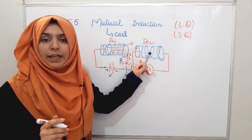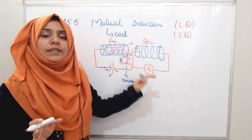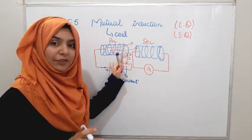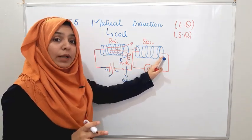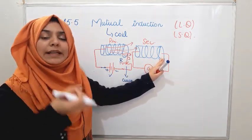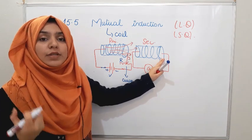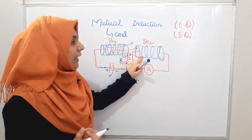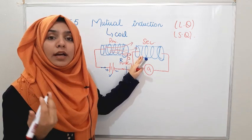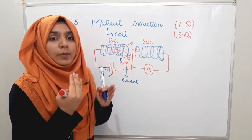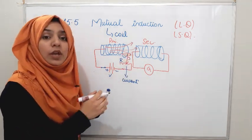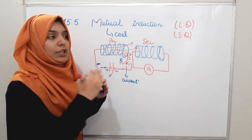When the current reaches the coil, we generate magnetic field lines. Before closing the switch, there were no magnetic field lines — everything was at zero. Now the magnetic field lines are generated here. The secondary coil is very close to the primary coil, so the magnetic field lines also start to move through it. Since it is a coil made of conducting material, there are two types of charges — positive and negative.